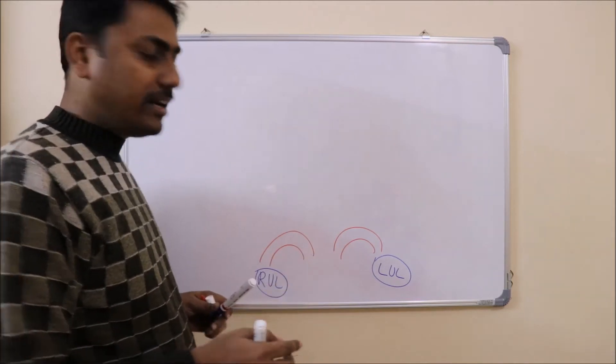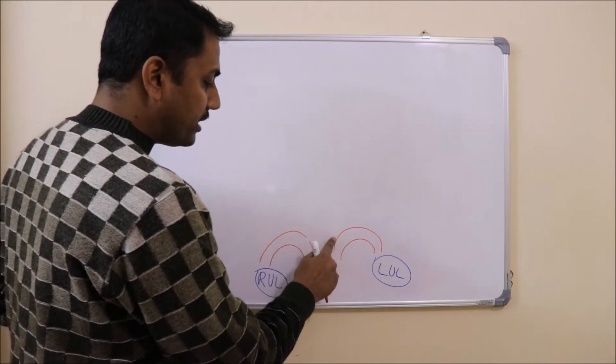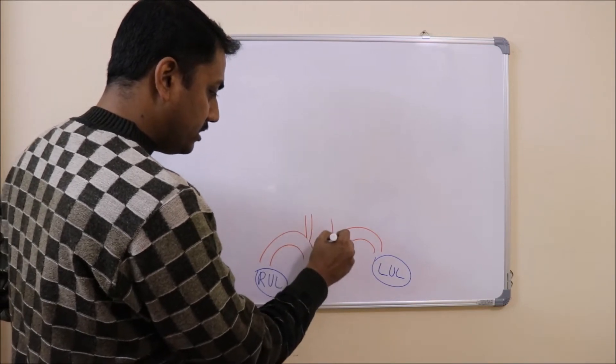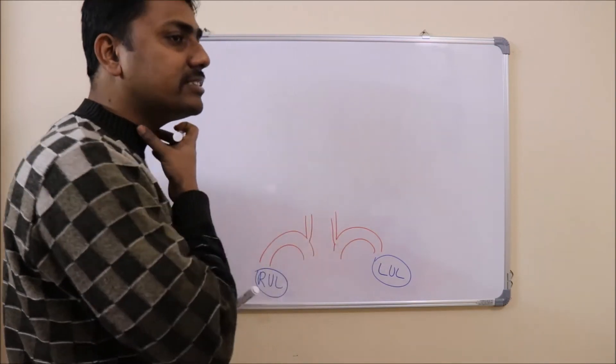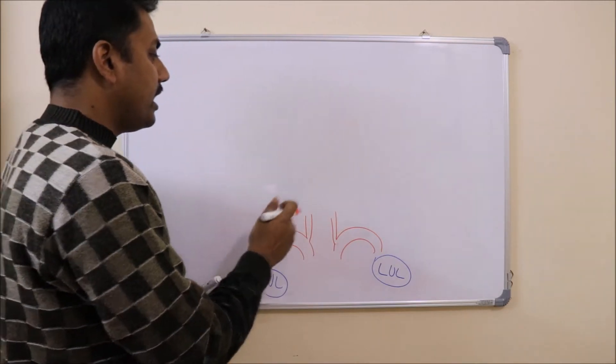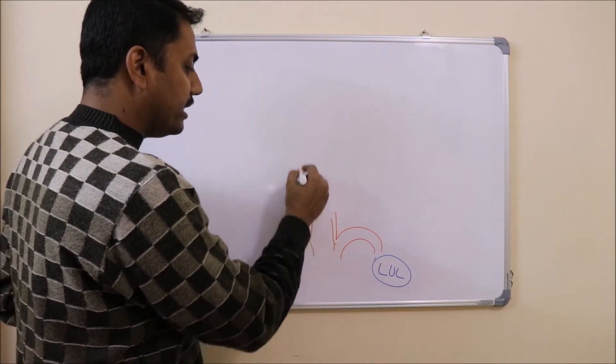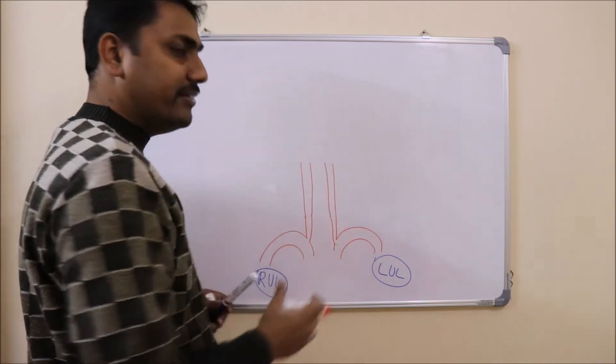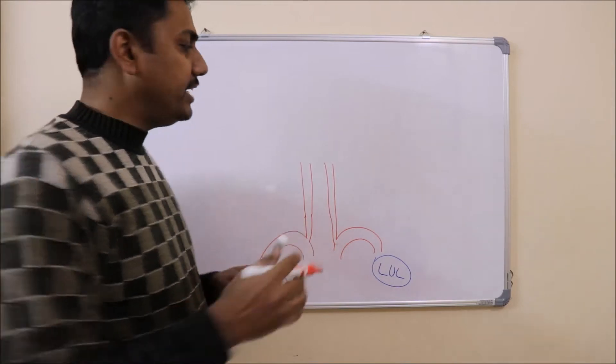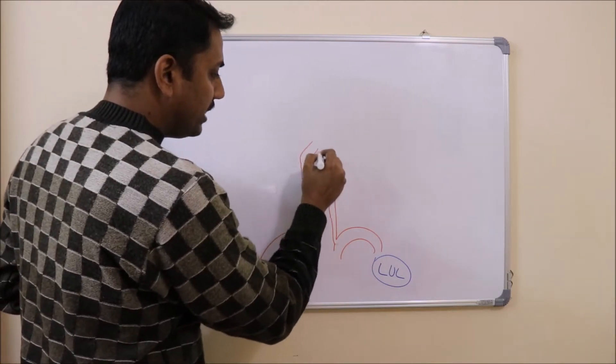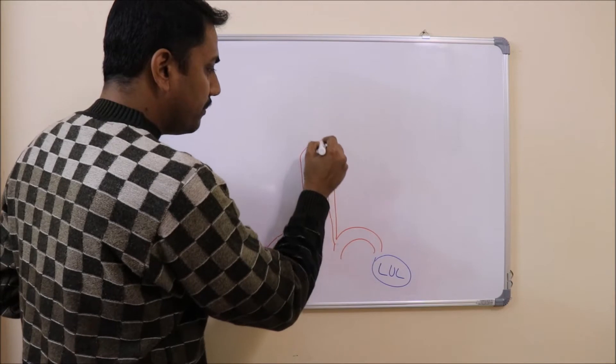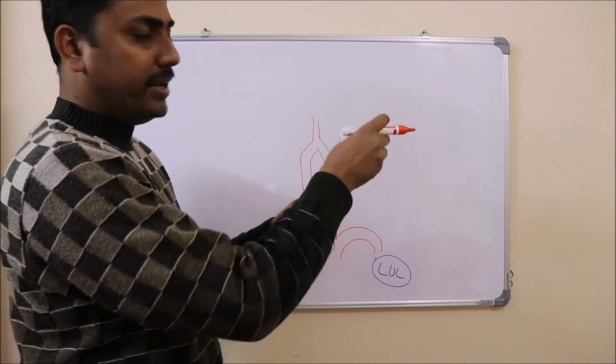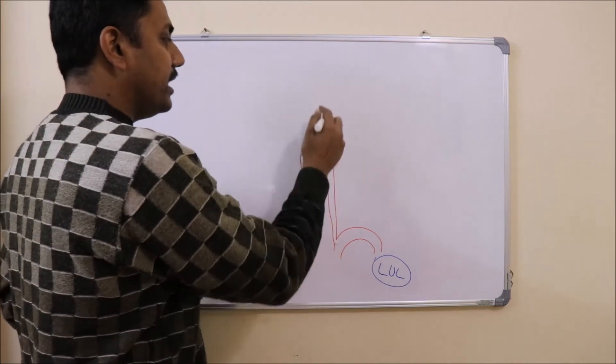From the first part there arises an artery which is known as the vertebral artery on both sides. This vertebral artery will ascend in the neck, pass through the foramen transversarium of the upper six cervical vertebrae, and through the foramen magnum it will enter into the brain. In the cranial cavity it will join to form another artery which is known as basilar artery, which will lie in front of the brain stem and supply the brain.